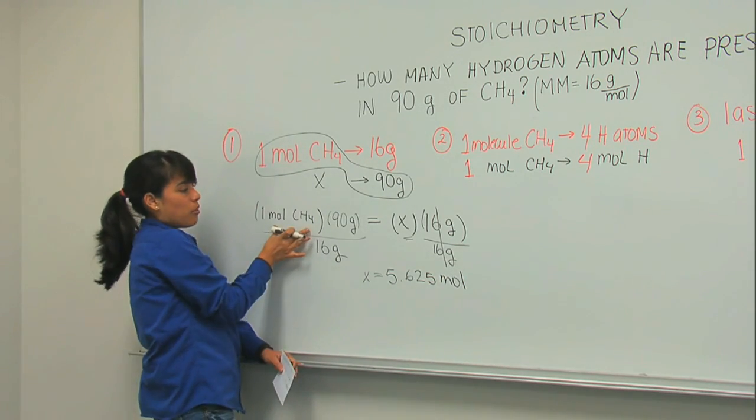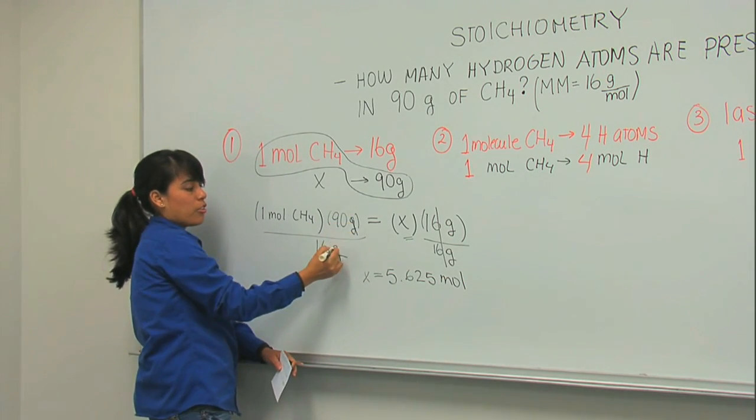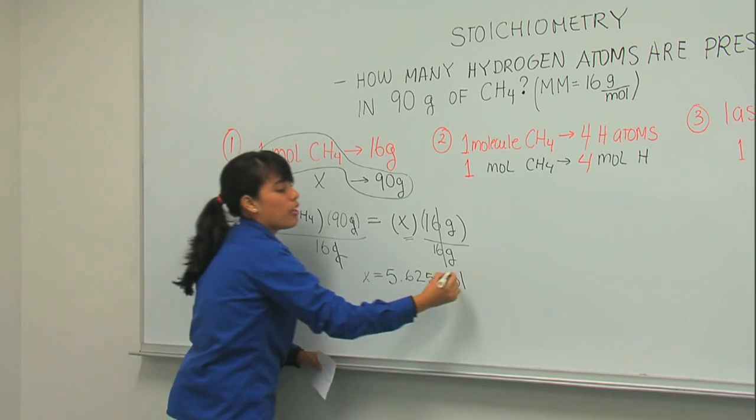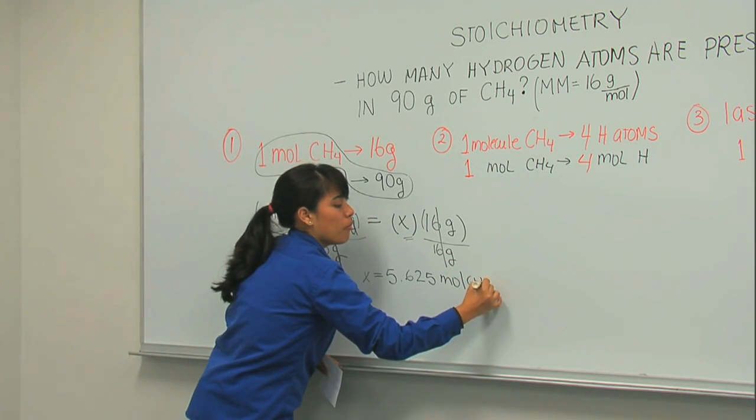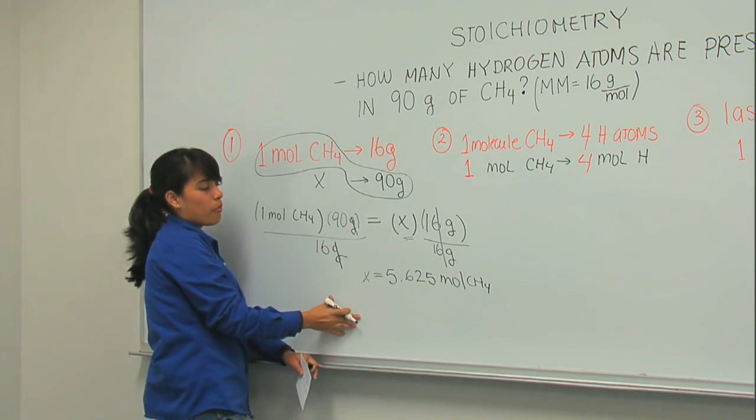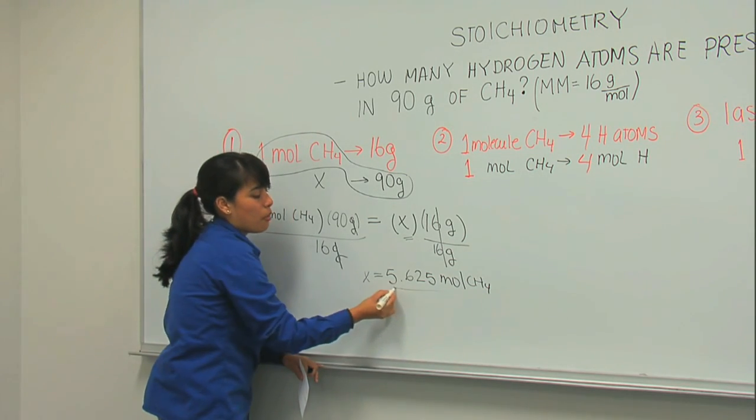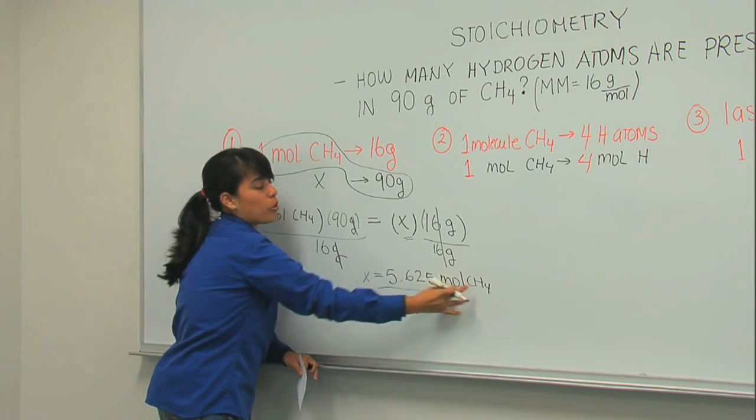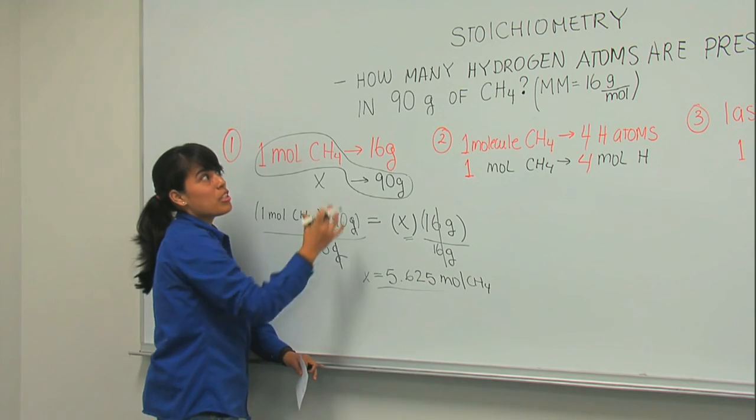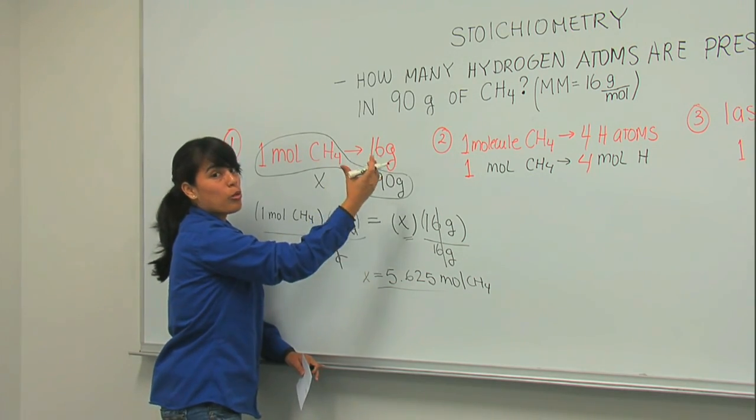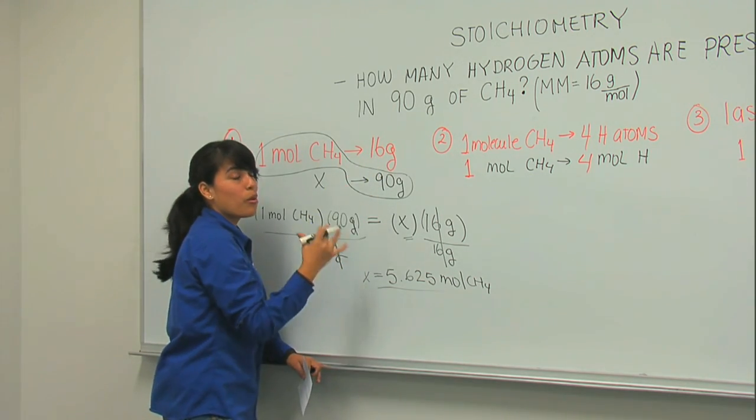Mole of what? Well, remember, here the units grams are canceling, so it's mole of CH4. But we haven't finished yet. Because I found the moles of CH4, and they want hydrogen. And they don't want moles. They want number of atoms. So I have to do a second step.